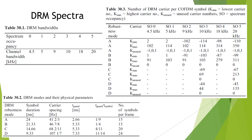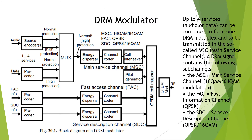As in other standards that define OFDM as a modulation method, modes are defined here. The DRM modes are designated as Robustness Mode A, B, C, and D. The mode determines the carrier spacing and the symbol duration. The physical parameters of the DRM modes can be seen in Table 2. The number of carriers in a COFDM symbol depends on the mode and on the DRM bandwidth, as listed in Table 3. Figure 1 shows the block diagram of a DRM modulator.